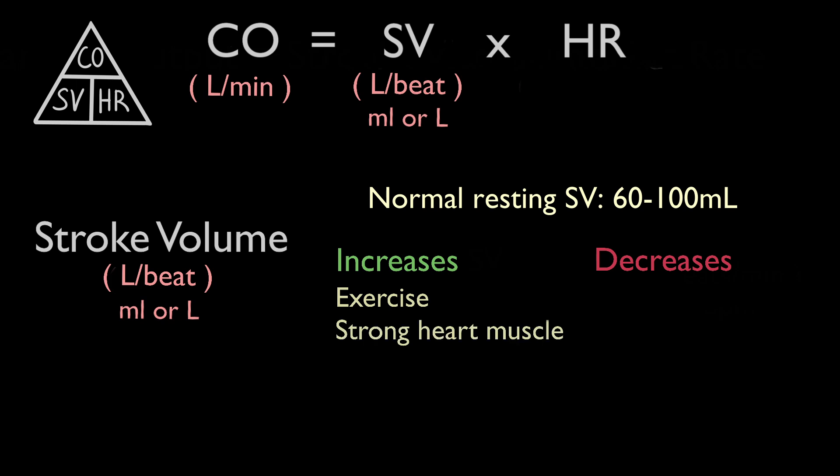Athletes tend to have stronger hearts that can pump more blood with each contraction, therefore their stroke volume tends to be larger. Conditions that increase resistance to blood flow, such as hypertension, will make it harder for the heart to eject blood, therefore higher blood resistance may cause a lower stroke volume.